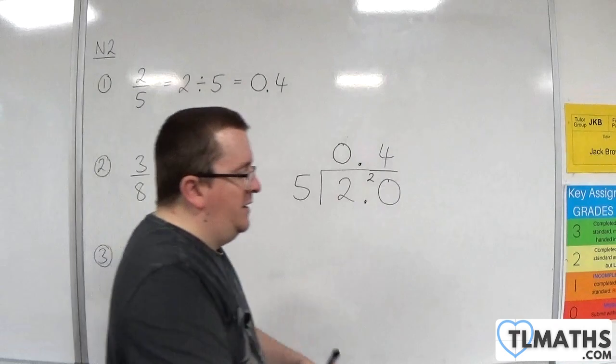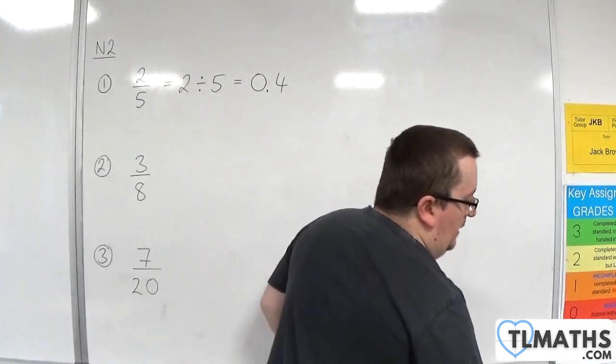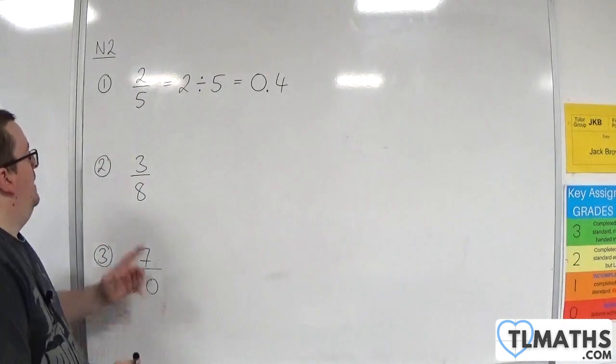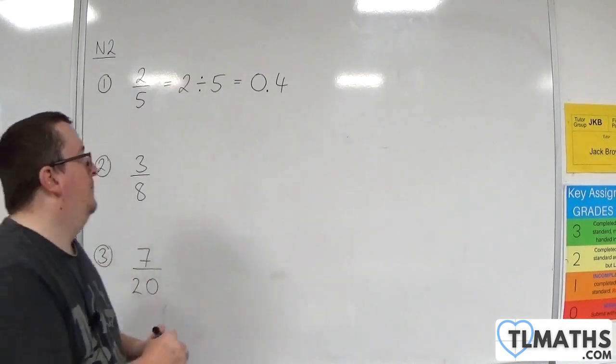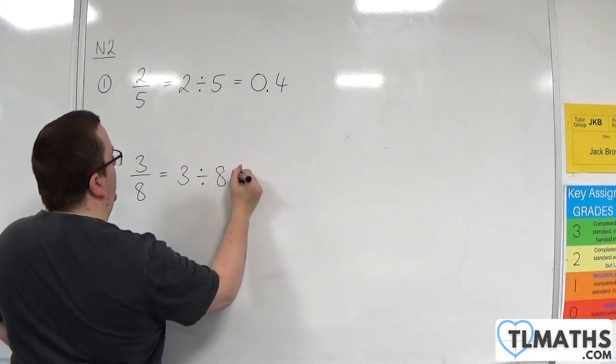I can use my short division method here to convert a fraction into a decimal. Let's take a look at three-eighths. Three-eighths is the same as three divided by eight.